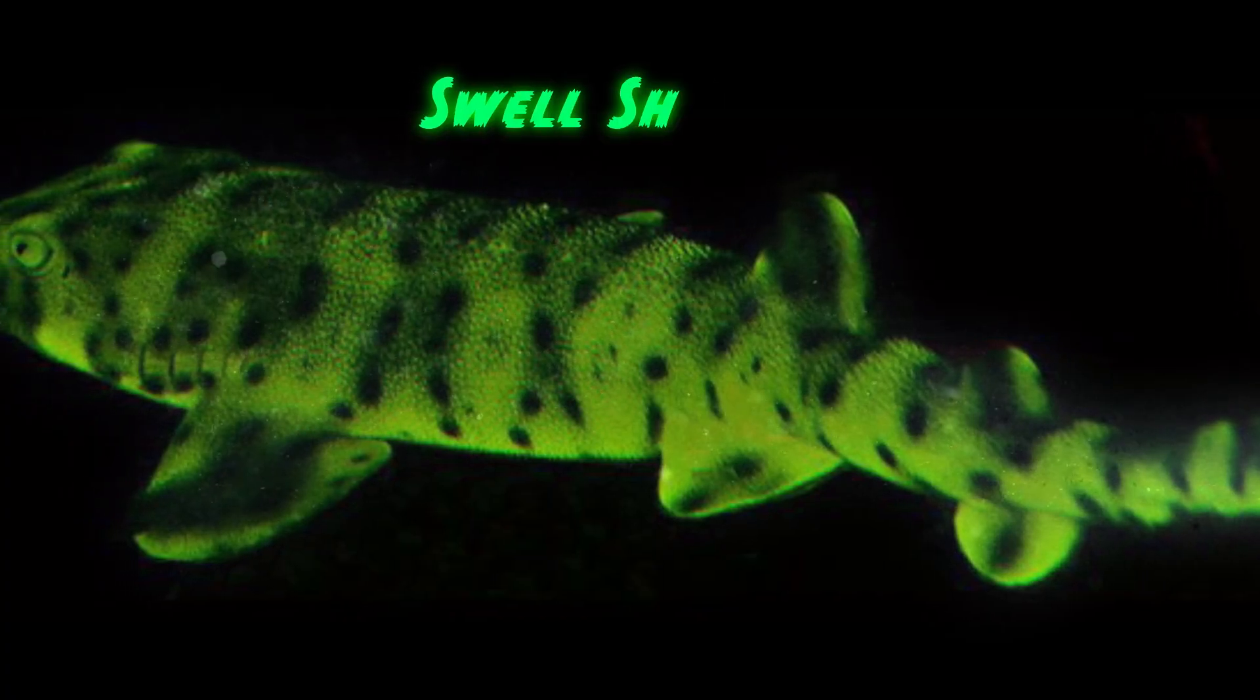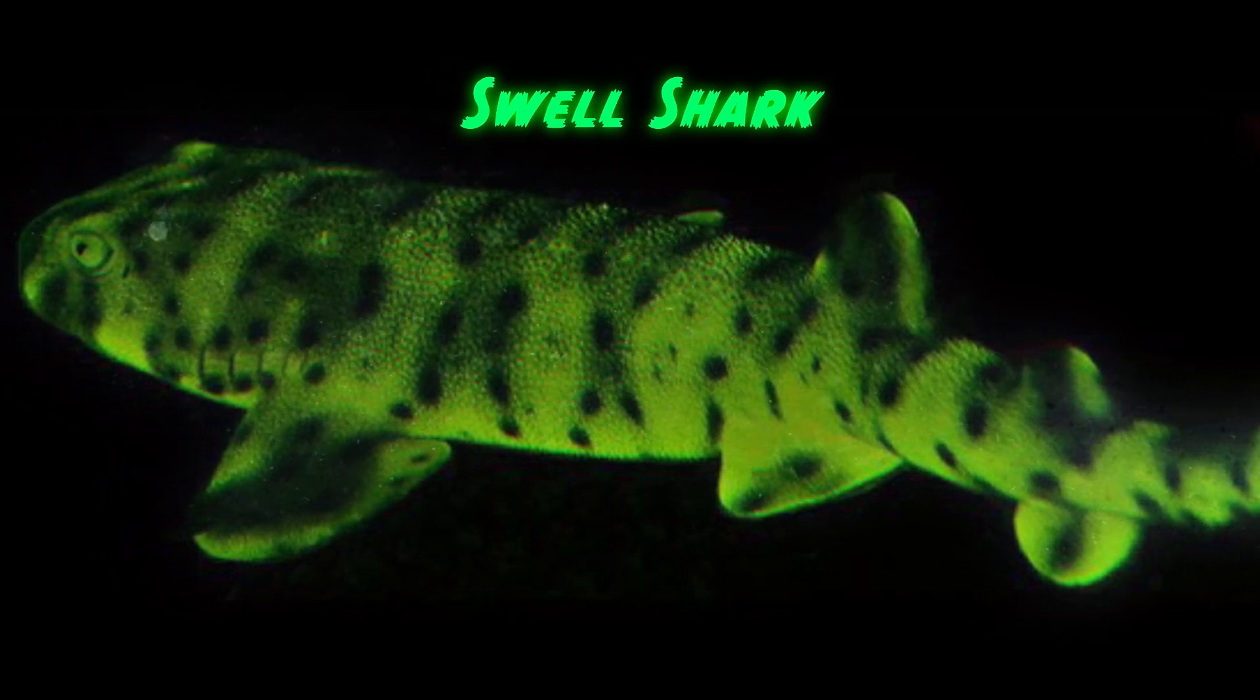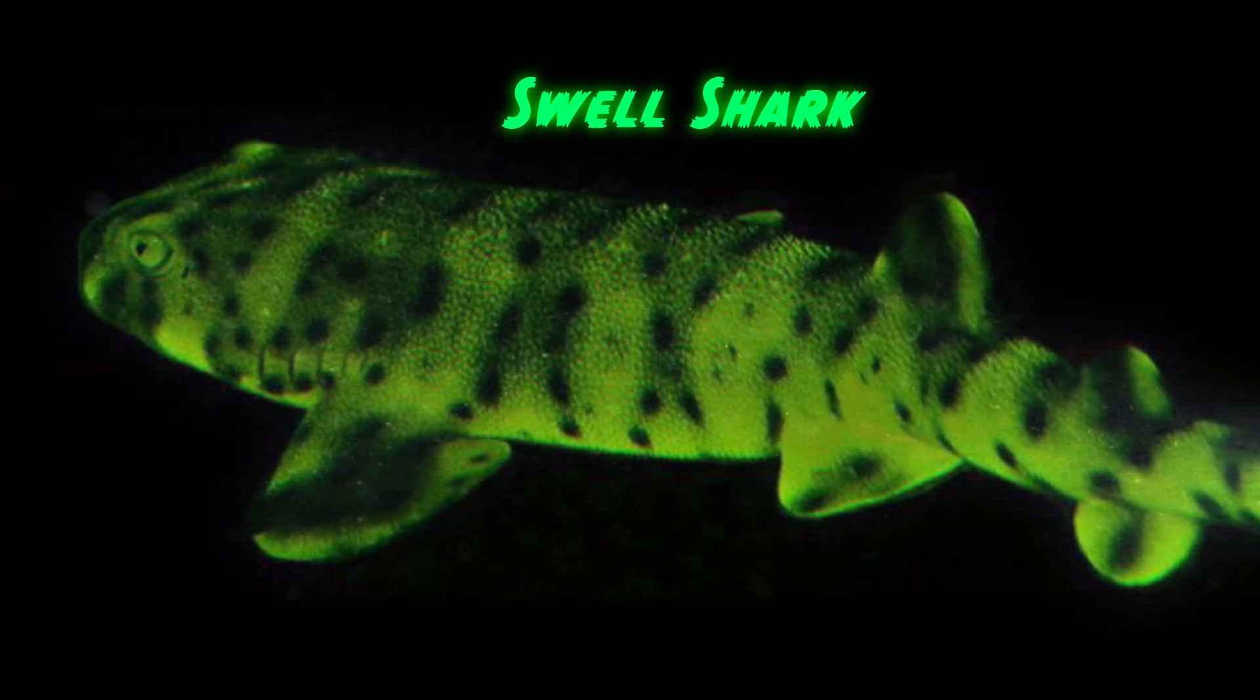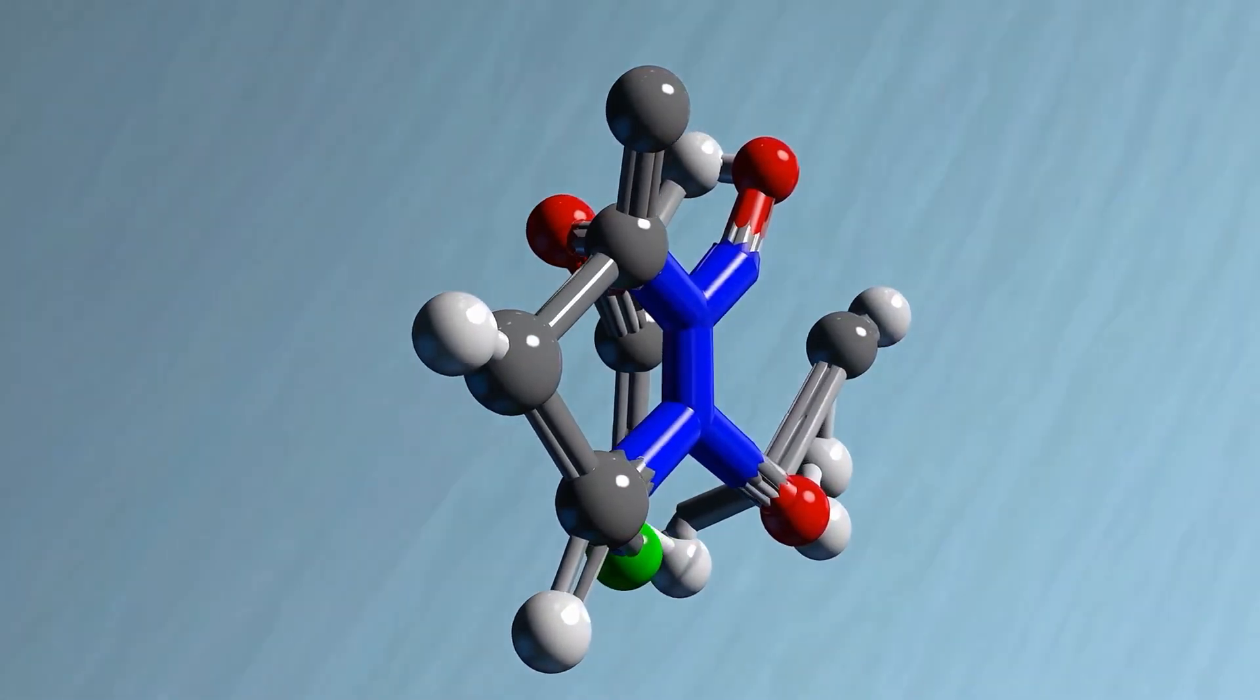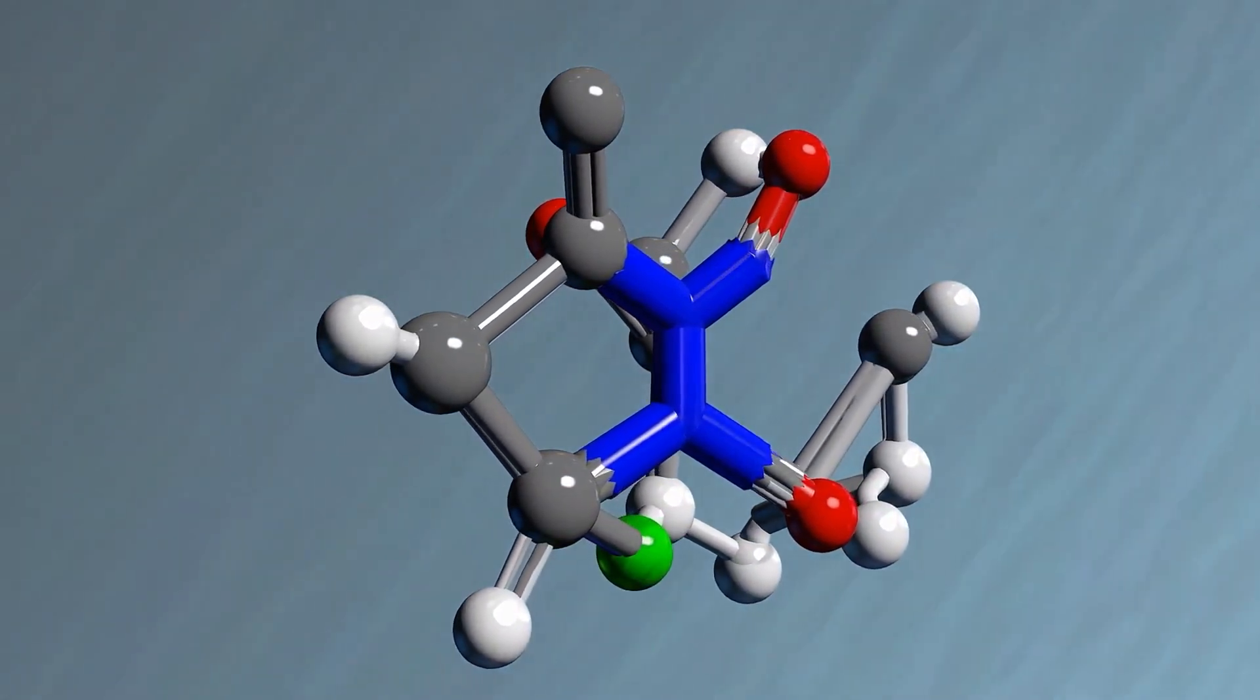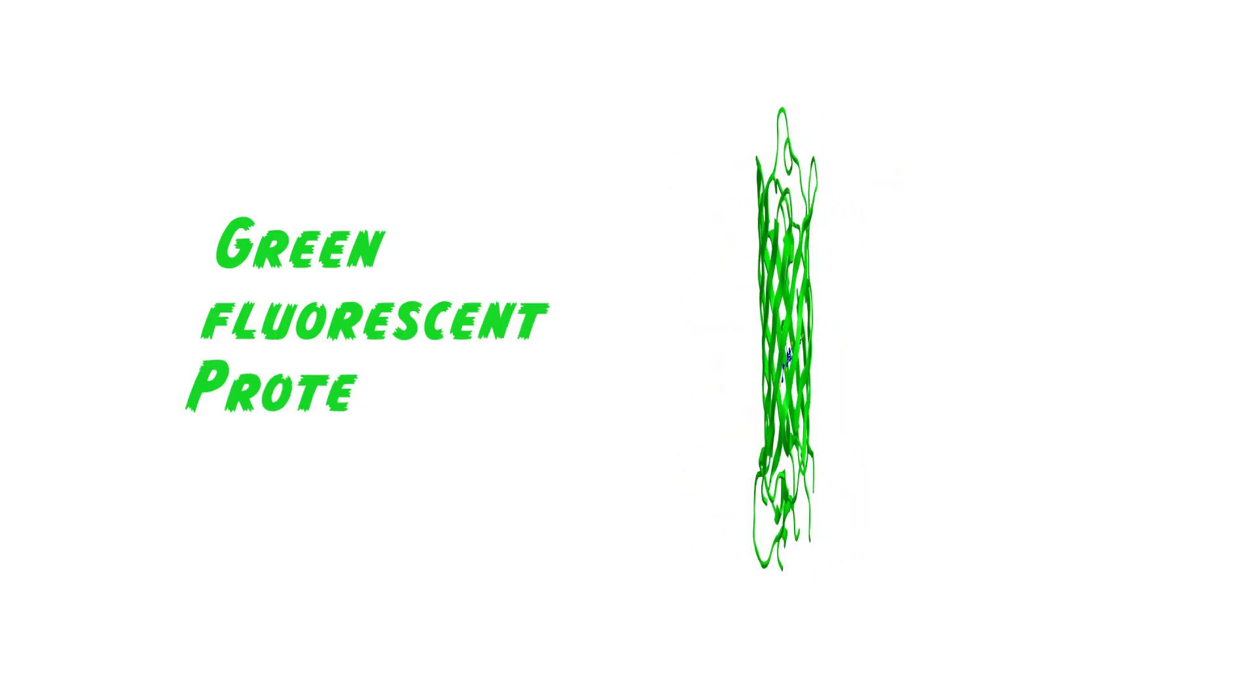Certain shark species, for example, have tiny metabolites within their skin that are responsible for their biofluorescence. However, the best known biomolecules behind the glow are proteins, and perhaps the most famous of all is green fluorescent protein.